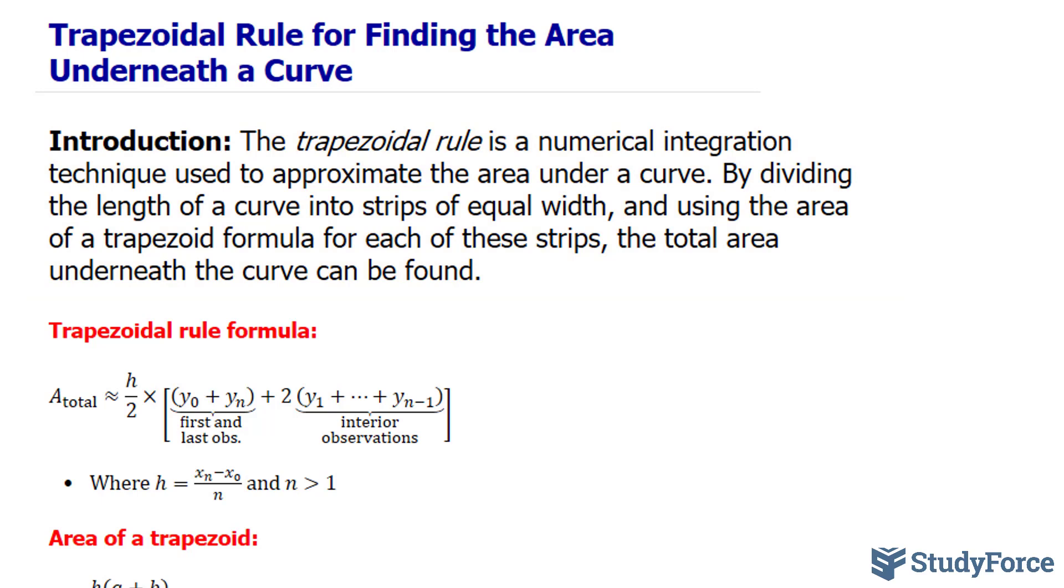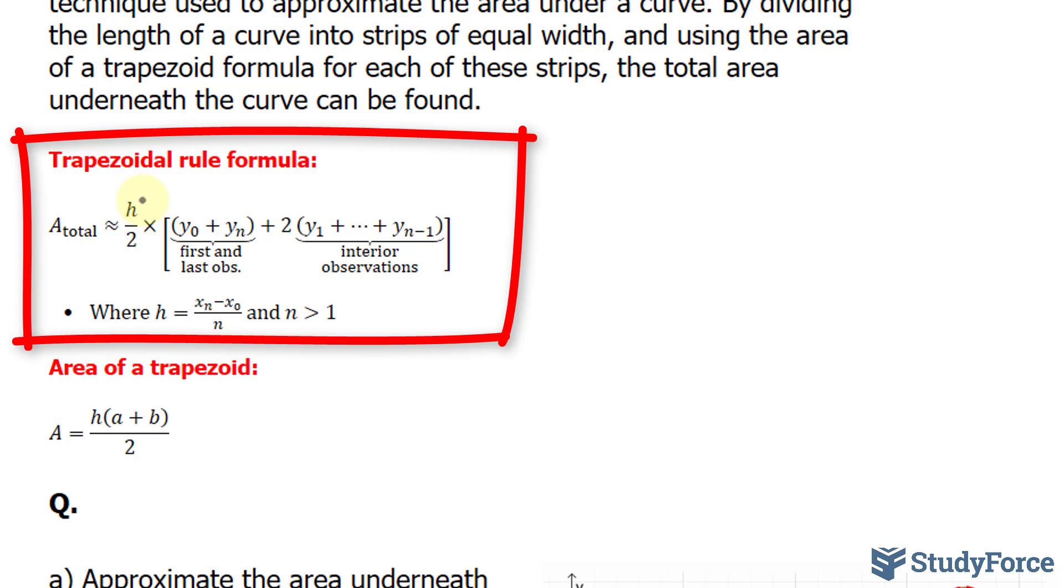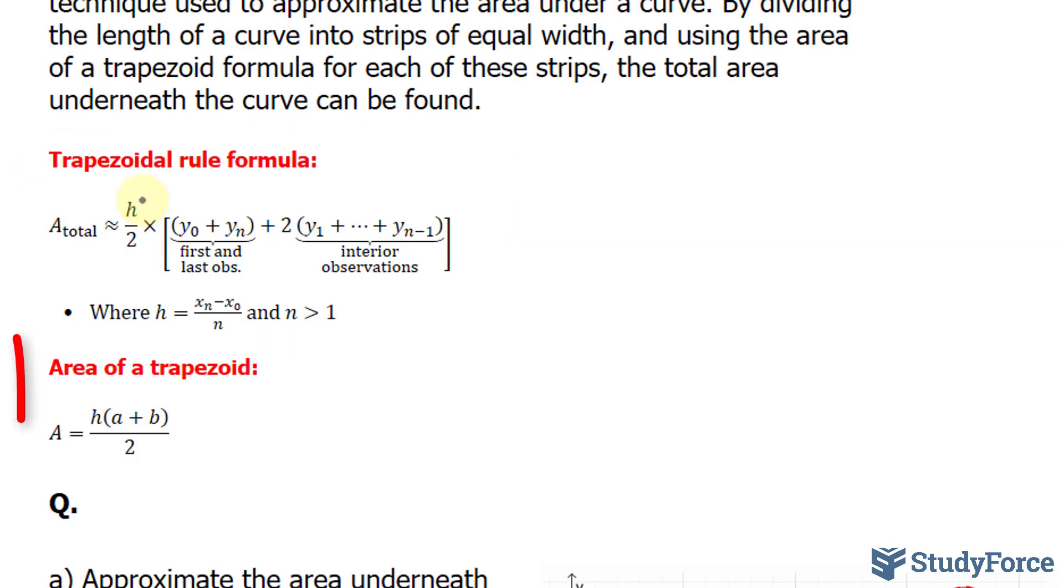Now, I've shown two important formulas here. The first one is the trapezoidal rule, and we'll discuss how this is derived as we complete our question. And underneath that is the area of a trapezoid, where we have area equals h multiplied by a plus b, all divided by 2. h represents the height of the trapezoid, and a and b represent the lengths of the parallel sides.